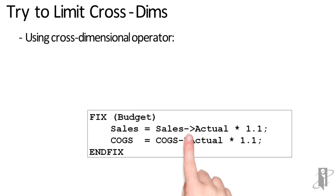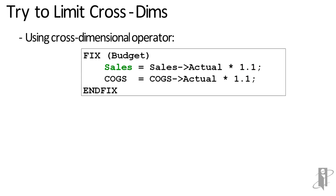Now you can go a little cross-dim crazy. For example, what if I wanted to set budgeted sales equal to 10% greater than actuals, and budgeted cost of goods sold equal to 10% greater than actual cost of goods sold? I could write it like this, which uses two cross-dimensional operators, but if I pause for a second, I notice I'm repeating a lot of things. On each line, I'm repeating the member — so sales and sales — and also looking downward, I'm repeating actual a couple of times.